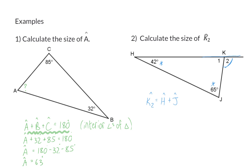And remember to then add the reason for this and here we used exterior angles of a triangle. We now know that angle H is 42 degrees and J 65 degrees. So K2 will have a size of 107 degrees.